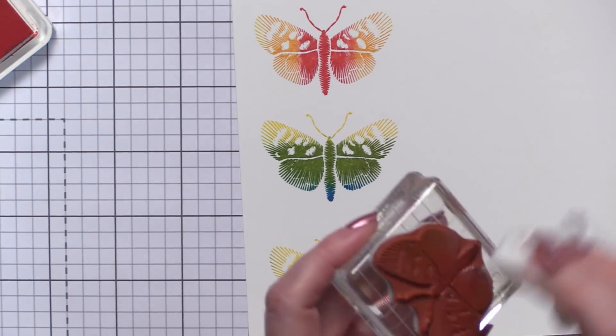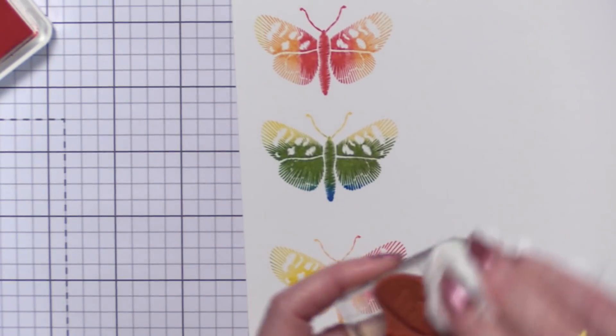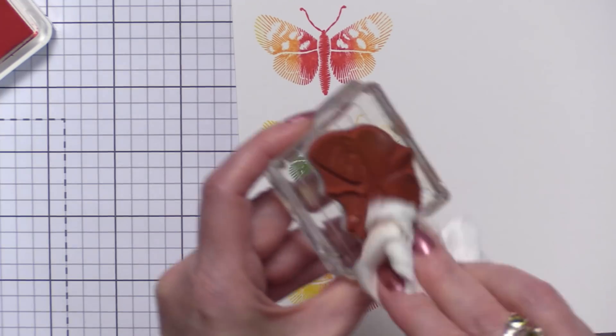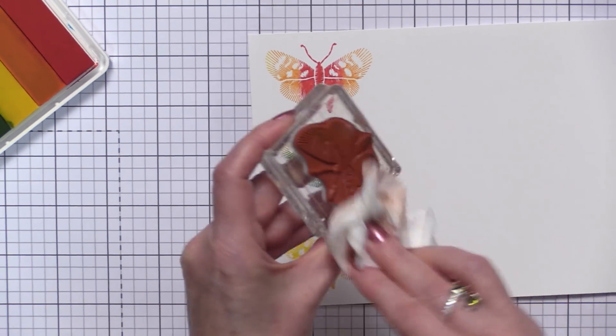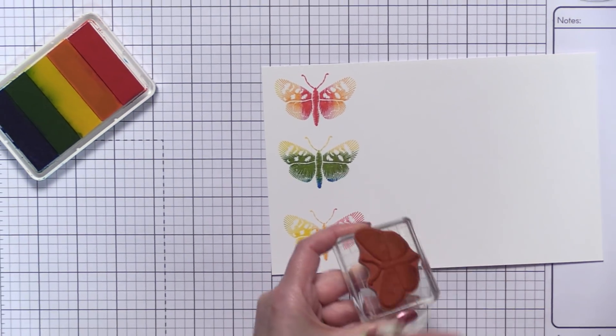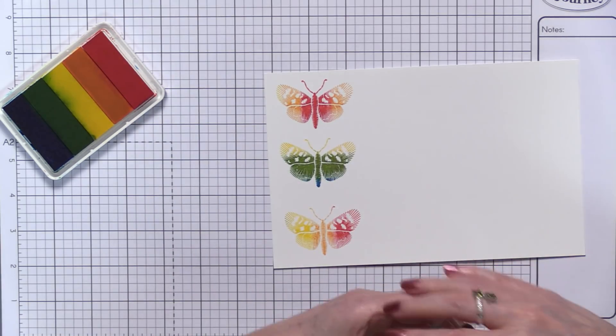So I absolutely love using different colors. I think butterflies and maybe perhaps flowers, but I think butterflies is one of the most perfect examples to use on these types of ink pads. The results are so beautiful.